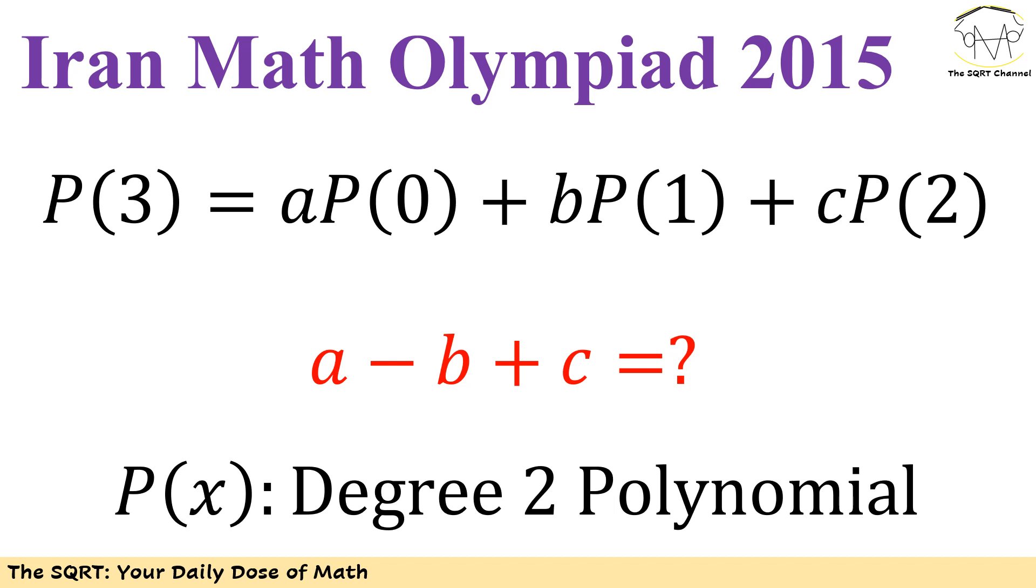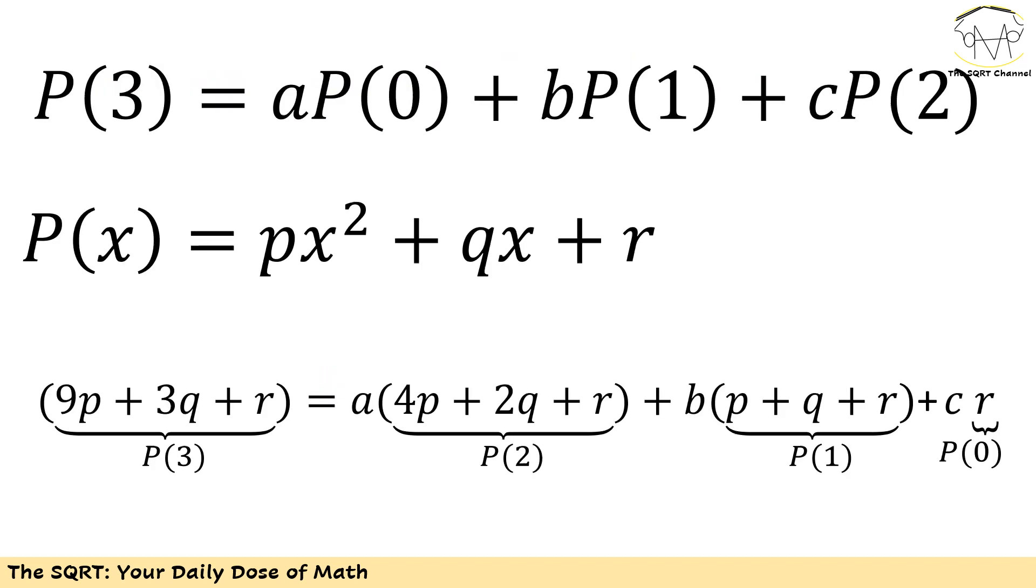Hello everyone, welcome to the SQRT channel. In this video I'm going to take another problem from 2015 Iran Math Olympiad. In this problem I have a polynomial of degree 2, P(x). We know that P(3) equals A times P(0) plus B times P(1) plus C times P(2). A, B, and C are constant numbers and we have to find the value of A minus B plus C.